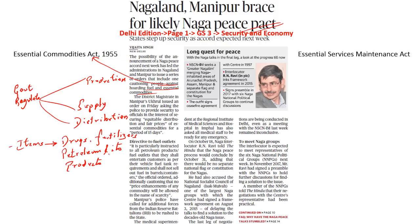How does this law work? If the centre suddenly finds that a particular commodity — say, onion — is in short supply and prices are suddenly spiking, all that it takes is that it immediately issues a notification. This notification will say what is the stock holding that a particular person would be able to hold on to, establishing a benchmark below which one can hold and above which one would not be able to store that commodity.